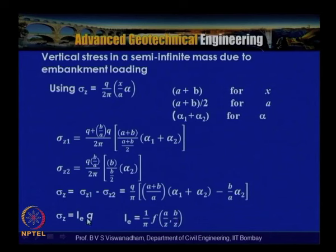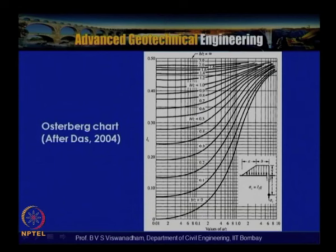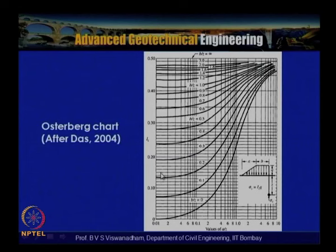So sigma_z = I_e × q, where I_e is the influence factor for embankment loading, a function of a/z and b/z. The Osterberg charts are available for this purpose, giving I_e values with a/z ranging from 0.01 to 10. These charts can also be used for pure triangular strip loading (b/z = 0). The increase in vertical stress is then sigma_z = I_e × q.